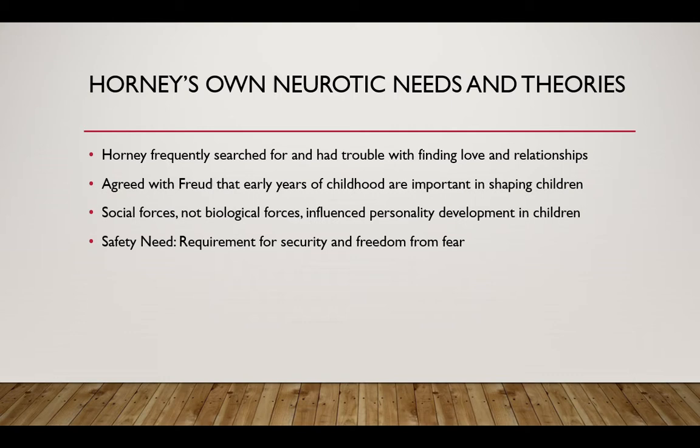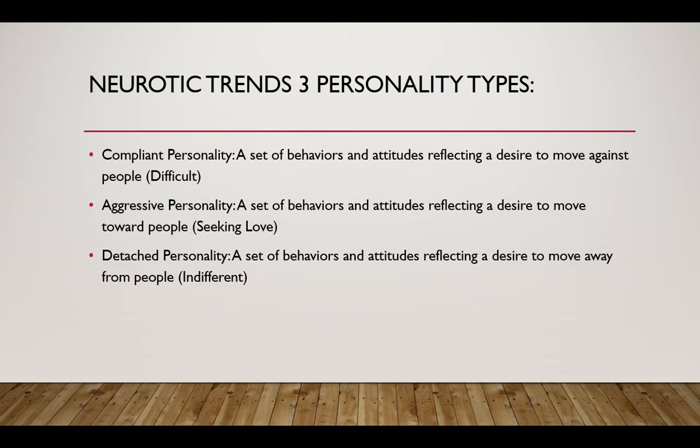The three neurotic trends are: first, the compliant personality, which is a set of behaviors and attitudes reflecting a desire to move against people — meaning difficult people, someone you'd have an argument with or someone hard to get along with. Second, the aggressive personality, reflecting a desire to move toward people — which I first thought would be combative, but it actually means seeking love and can be seen as needy or clingy. Lastly, the detached personality, reflecting a desire to move away from people — someone indifferent, a loner who doesn't need to be around family or friends and is off doing their own thing.